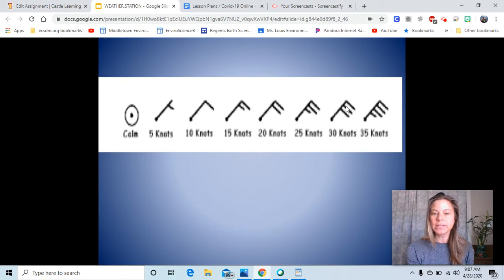Three long ones, each worth ten, ten, twenty, thirty, thirty knots. Three long ones and a short one, thirty plus five, thirty-five knots.